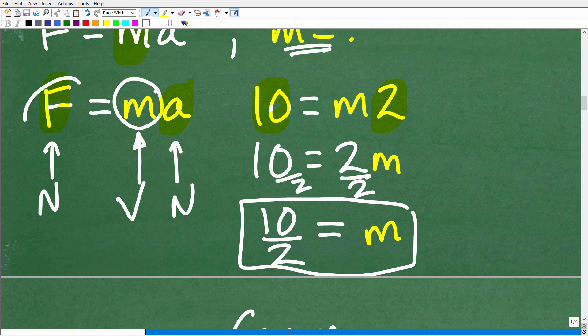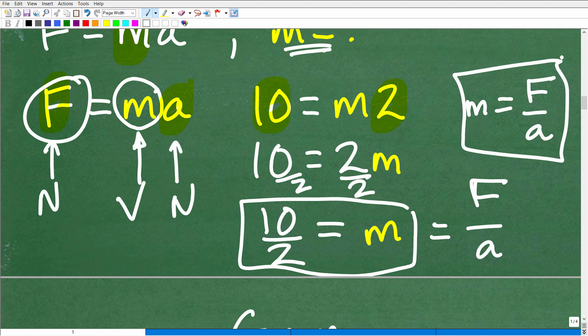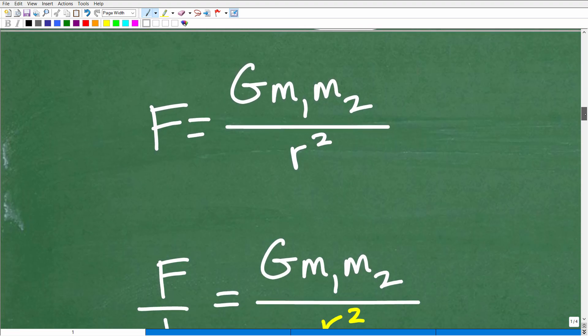And in this case, what was 10? Well, 10 was force. And what was the 2? The 2 was representing like the acceleration. So M is equal to F over A. So hopefully that makes sense. And if that does make sense, then you should be able to do this problem now.